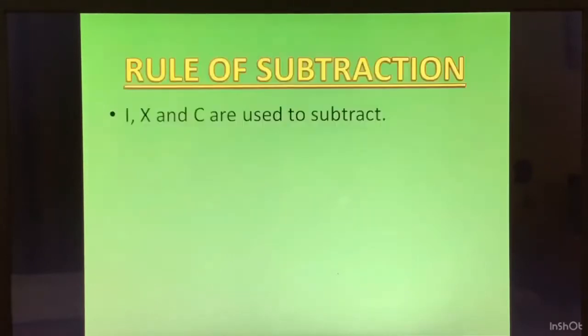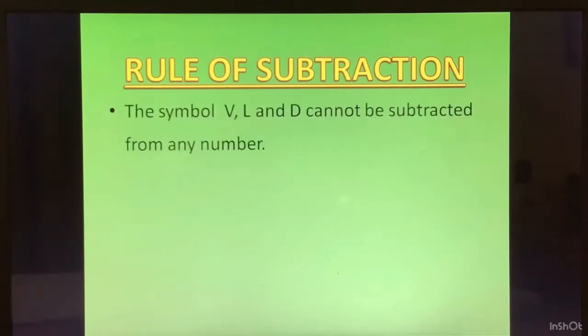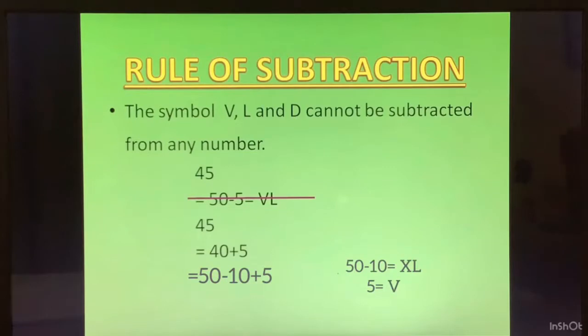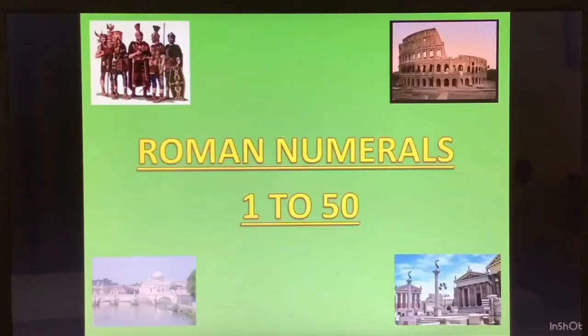Now, the next rule: rule of subtraction. I, X and C are used to subtract. The symbol V, L and D cannot be subtracted from any number. Let us take an example 45. You cannot write it as 50 minus 5. That is incorrect. We will write 45 as 40 plus 5. 40 in turn will be written as 50 minus 10. So we can write XL, that is X is 10 and L is 50. Subtraction rule. Now, XLV as 45.